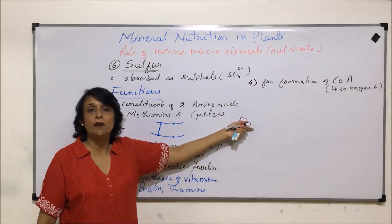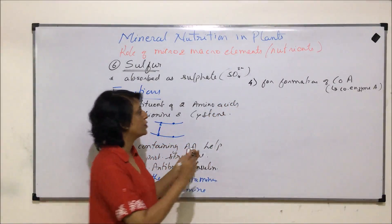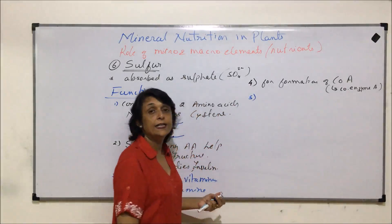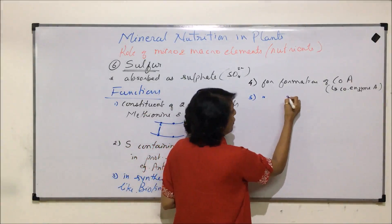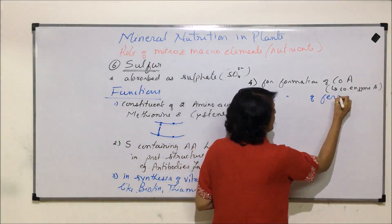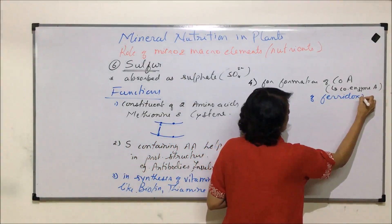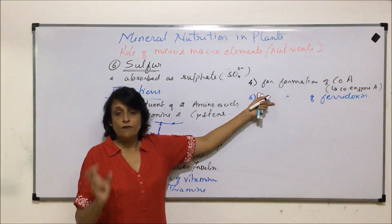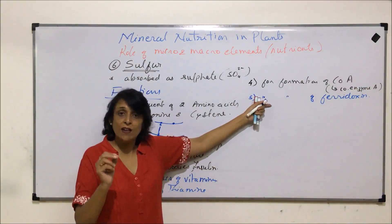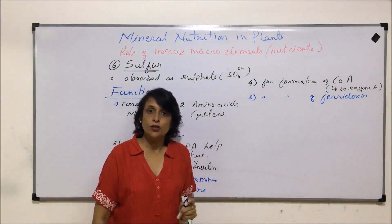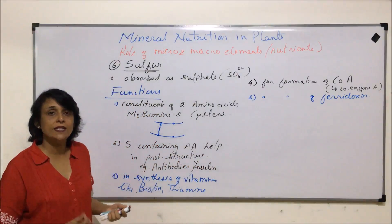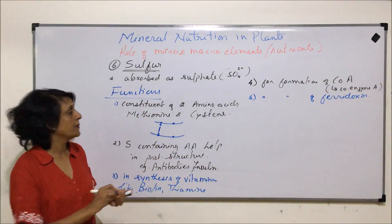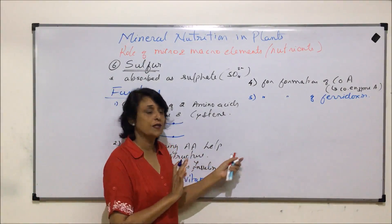Coenzyme A is involved in respiratory chains and photosynthetic chains. Another place where sulfur plays an important role is ferredoxin, which acts as an electron acceptor. Ferredoxin also has sulfur as its constituent.